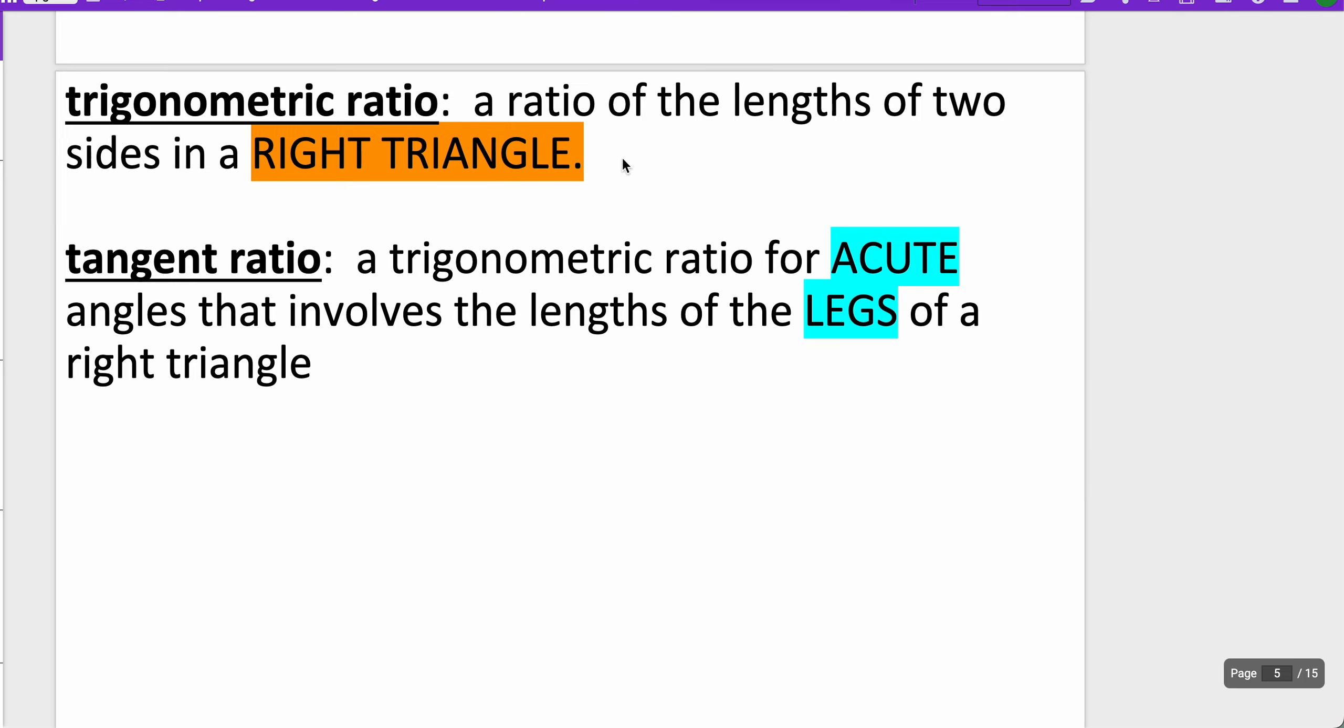Today we're just going to be talking about the tangent ratio, but we'll be able to see sine, cosine, and tangent. A lot of you may already have heard about this saying: sine is SOH, opposite over hypotenuse. Cosine is CAH, adjacent over hypotenuse. And then tangent is TOA, which is opposite over adjacent.